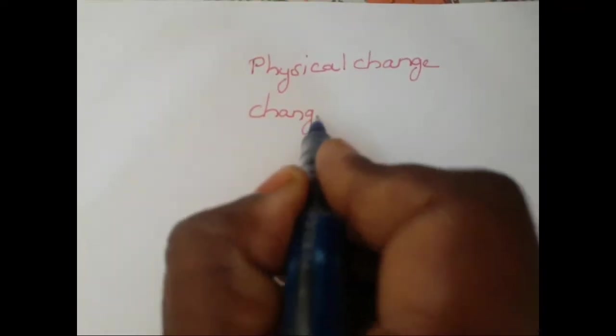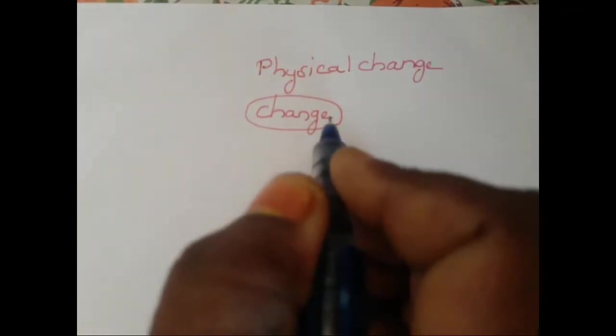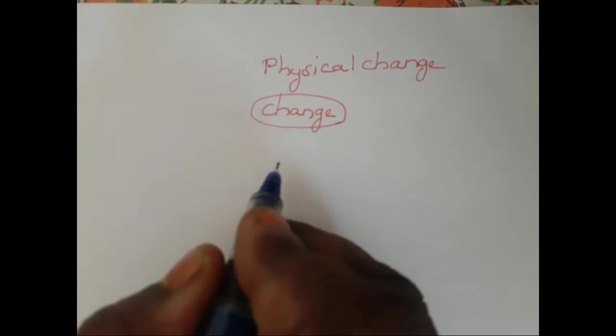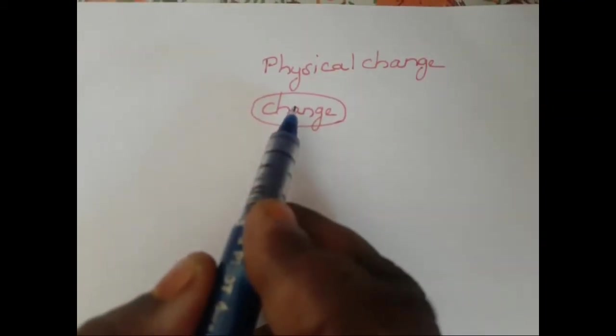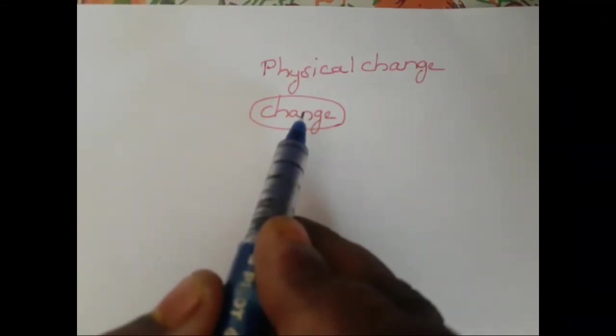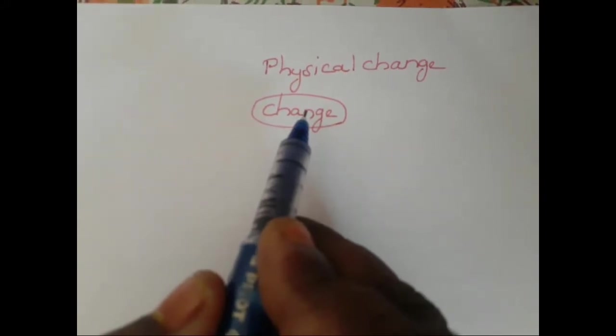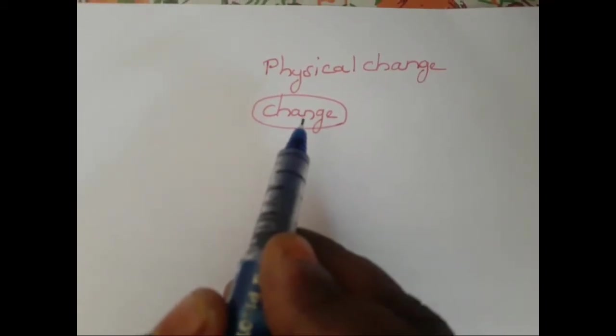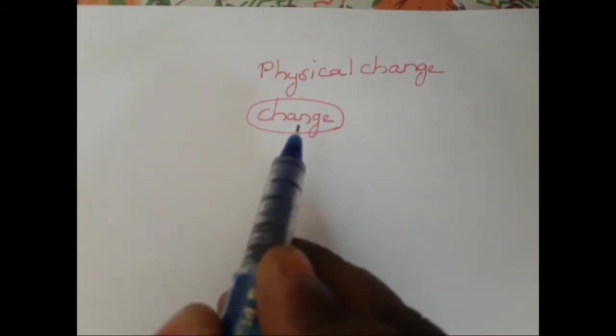Hi kids, how are you all? Today we are going to see about physical changes. Before seeing this topic, you should know what is meant by a change. Change is the only thing that takes place around us — it happens always. All the things in the world undergo a change. Even you, me, all the living beings and all the non-living beings have the capability to undergo a change.